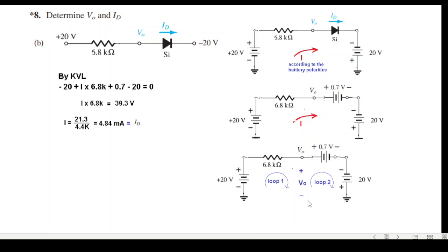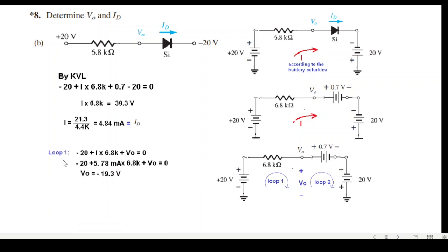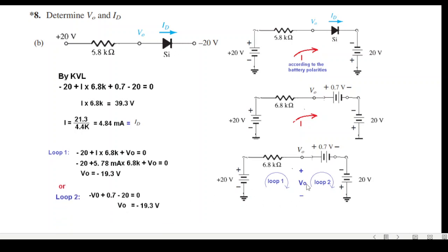Since V0 is in the middle of the circuit, we redraw it to isolate V0 and take either loop 1 or loop 2. For loop 1: minus 20 plus i times 6.8kΩ plus V0 equals zero, giving V0 equal to minus 19.2V. Solving via loop 2 — minus V0 plus 0.7 minus 20 — yields the same answer of approximately minus 19.3V.